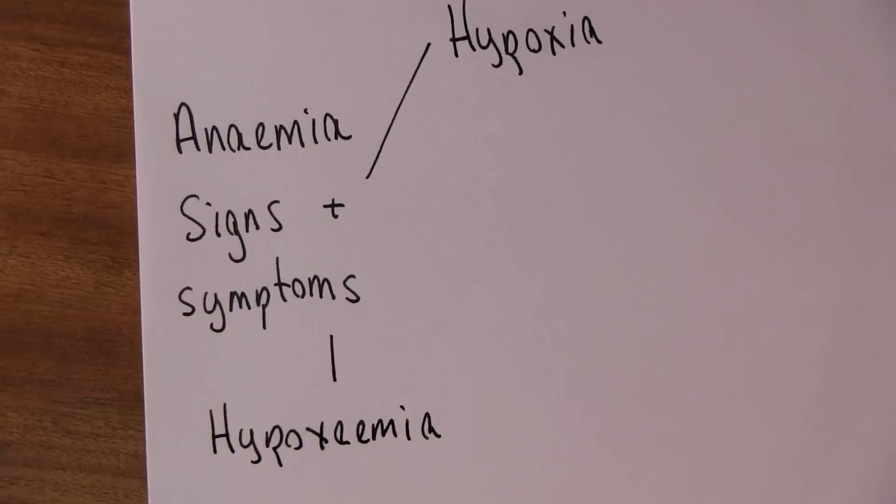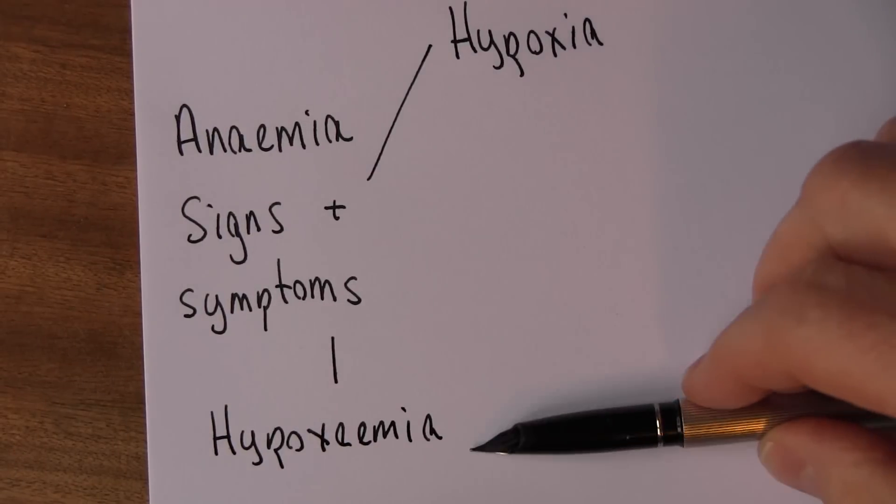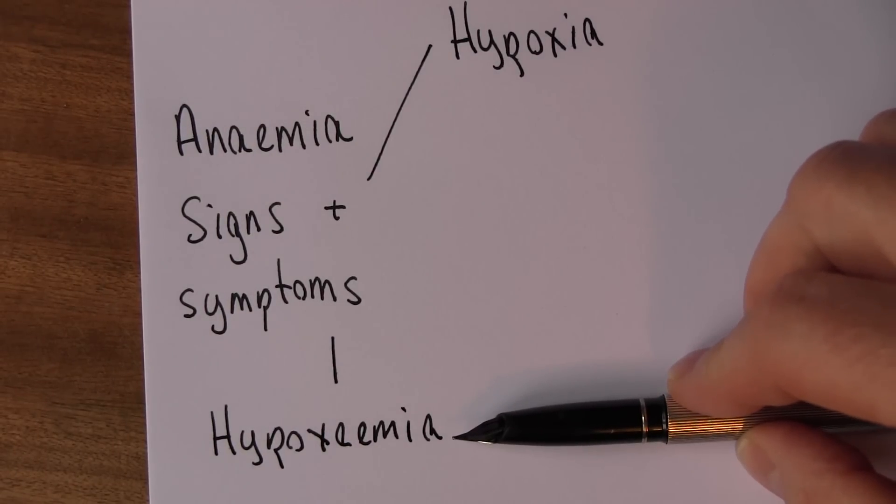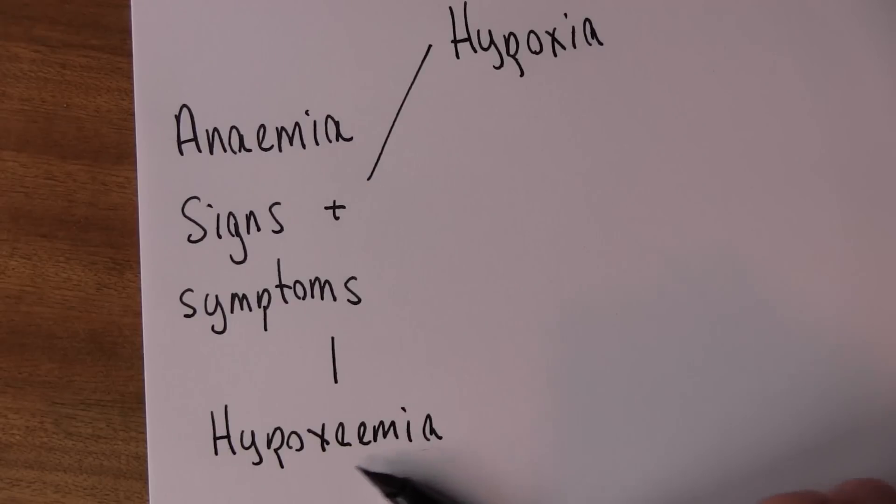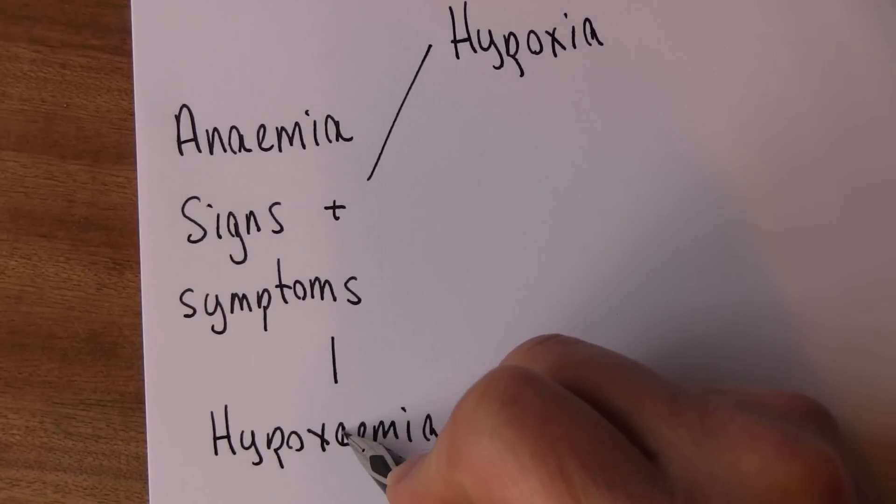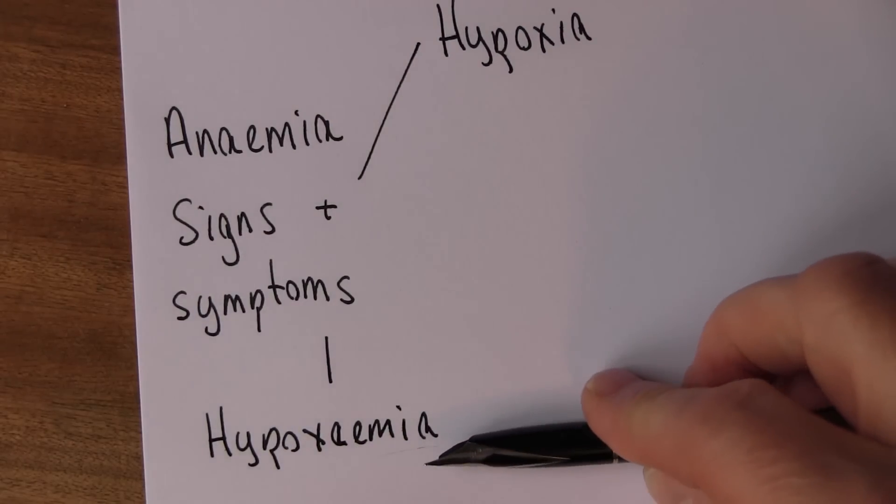Now what do we mean here? Well, hypoxemia is a deficiency of oxygen in the blood, not enough oxygen in the blood. The 'emia' part means in the blood. In American spelling they don't have that A, they just have the E.